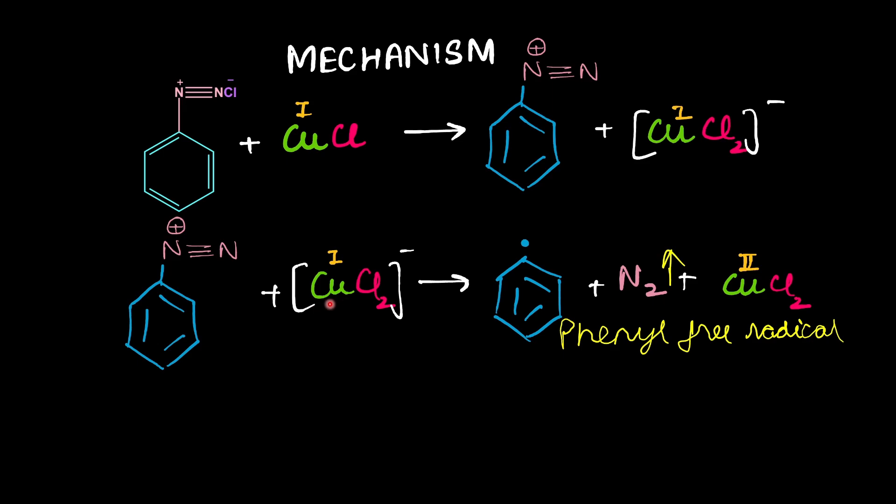So now what we have got is cupric chloride. Now the next step is quite interesting. This phenyl free radical is now going to react with this cupric chloride. So this phenyl free radical abstracts a chlorine atom and what gets formed? You get chlorobenzene and what you get back from cupric chloride? You get back cuprous chloride. This is what you started with. This is what you get back and that is why we can say that cuprous chloride is the catalyst of the reaction as it does not get consumed in the course of reaction.